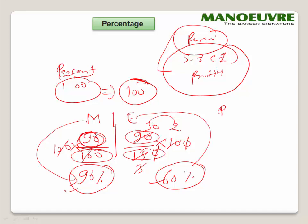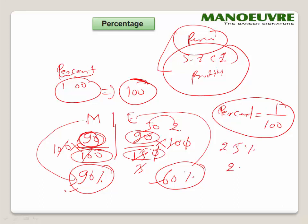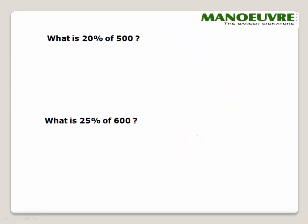Whenever you see a percentage, think of it as 1/100. So if I say 25%, I can write it as 25/100, which simplifies to 1/4. In a nutshell, percentage is nothing but a fraction over 100.